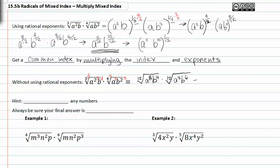Since they have a common index, we can rewrite them all under one index, which is twelve. We get a to the eighth, b to the fourth, a to the third, b to the sixth. This can be rewritten by adding the exponents together, and we'll get the twelfth root of a to the eleventh, b to the tenth. Much faster process.